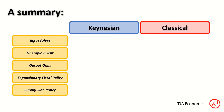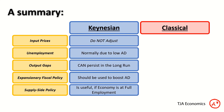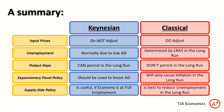Here's a comparison table. Keynesians say: input prices don't adjust; unemployment is normally caused by low levels of AD; output gaps can persist; expansionary fiscal policy should be used; and supply-side policies are mostly useful when at full employment. Classical economists say: input prices do adjust; in the long run, unemployment is only really determined by LRAS, not AD; output gaps don't persist — we self-adjust; expansionary fiscal policy only leads to inflation; and the best way to reduce unemployment in the long run is supply-side policy.